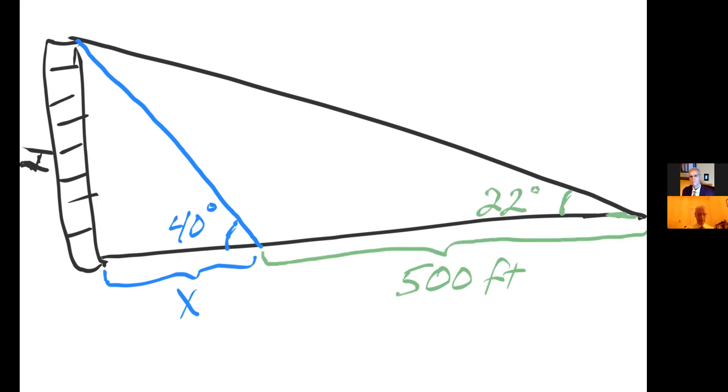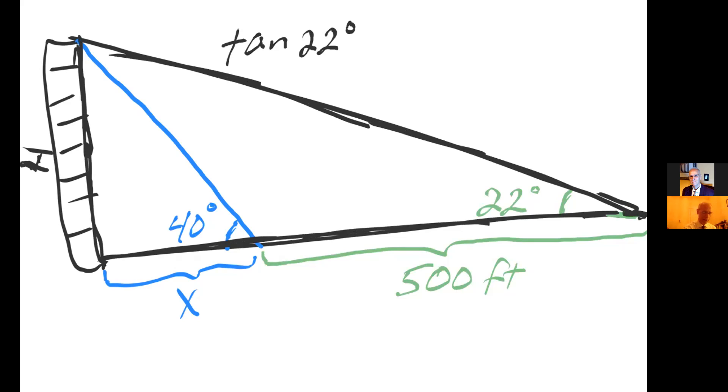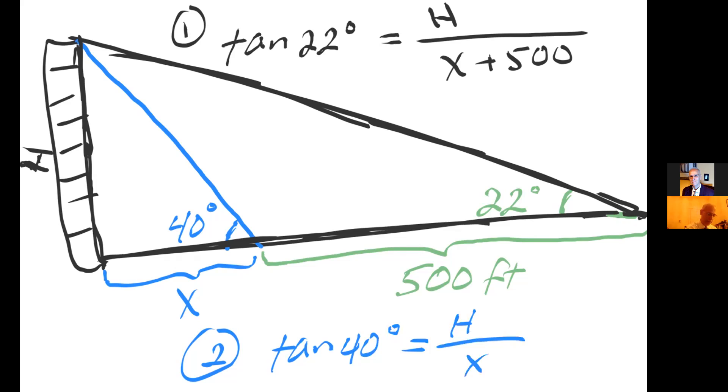So two things I can from this picture claim. First of all, that tangent of 22 degrees, using the larger triangle, this triangle right here, equals side opposite over adjacent, in this case H over x plus 500. So let me say that this was my equation one. And for equation two, I can claim that tangent of 40 degrees equals side opposite over adjacent, H over x, using this triangle.